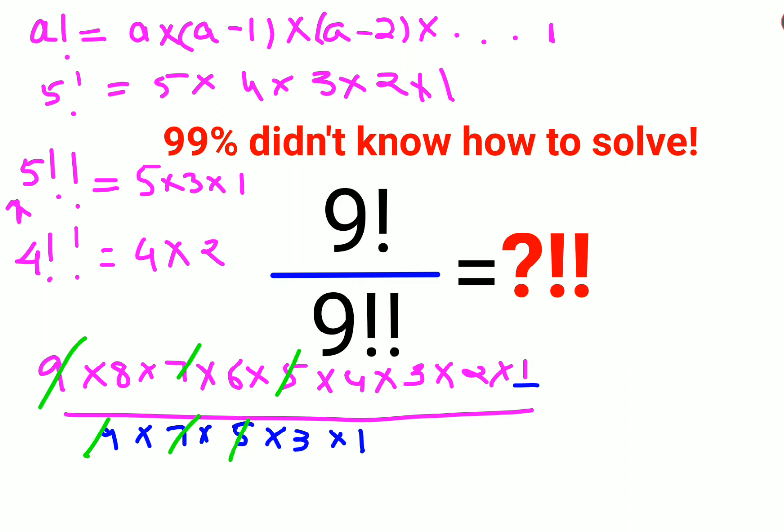Now things are cancelling. This and this will cancel, this and this will cancel, 5 and 5 are cancelling, 3 and 3 is cancelling, and 1 and 1 is cancelling. I am left with 8 into 6 into 4 into 2.